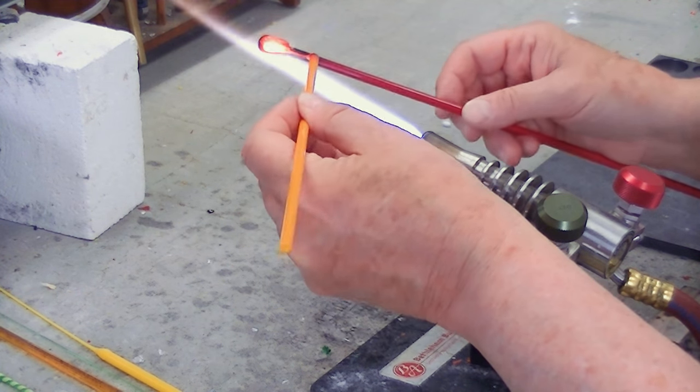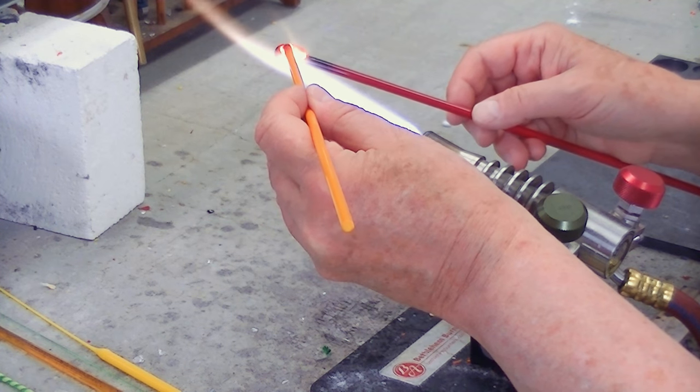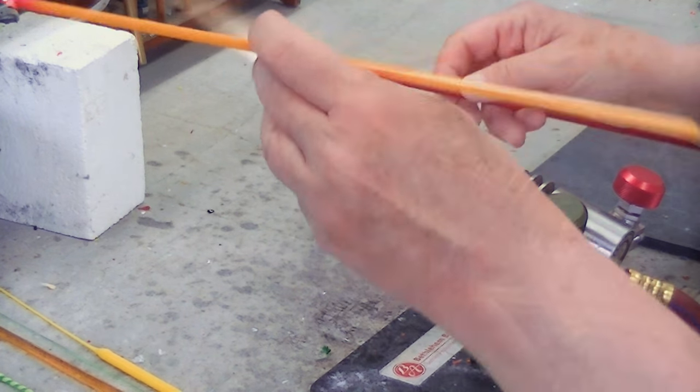And then we're going to encase the entire bullet in a transparent color. In this case, I used topaz, but you pick one that will go with the colors that you select.